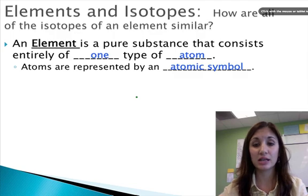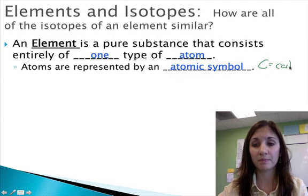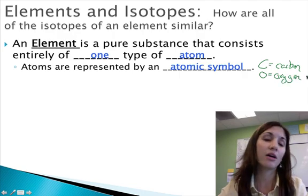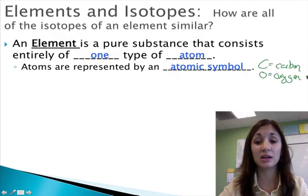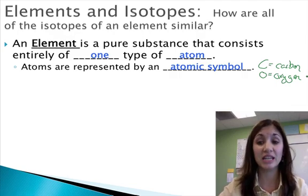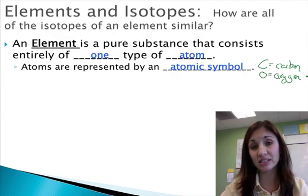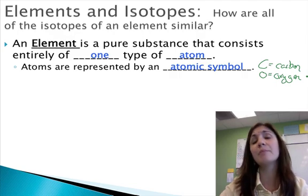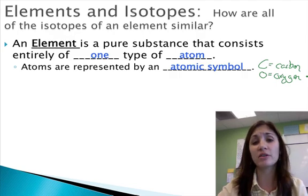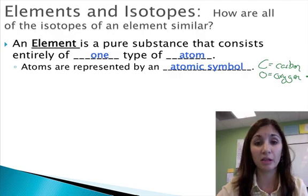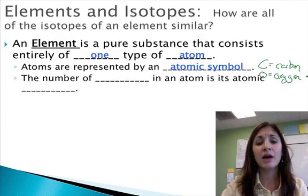So a couple examples: C stands for carbon. O stands for oxygen. There are about 92 elements that exist naturally in nature. Some other ones we create. And the periodic table is a great place to find all this information. It has the atomic number, the atomic mass, and a whole bunch of other information about each element on it.